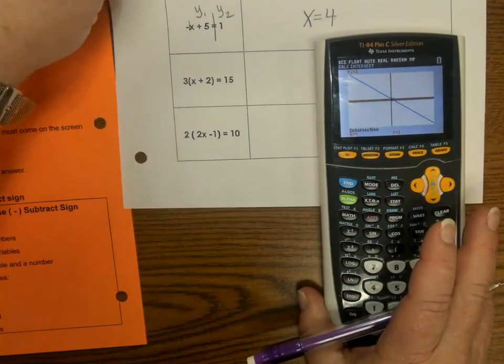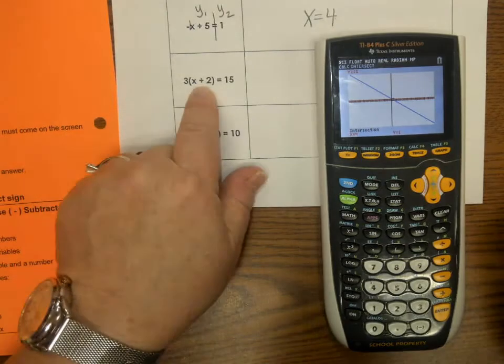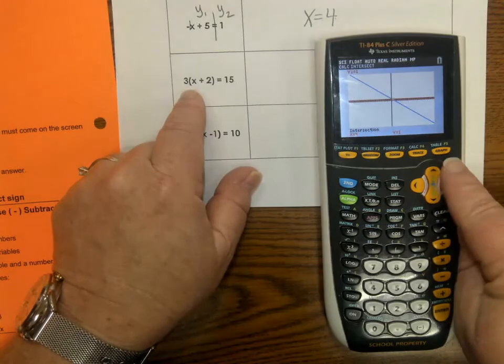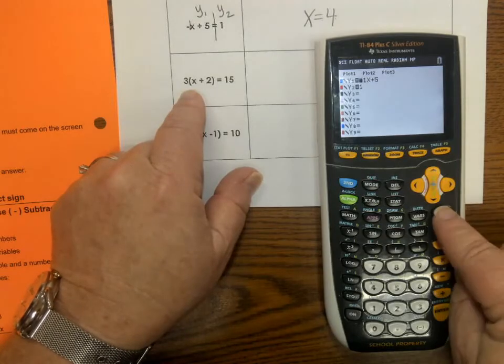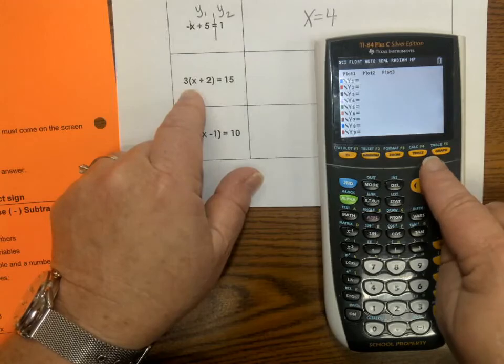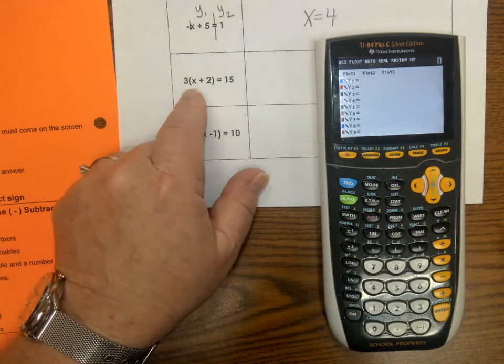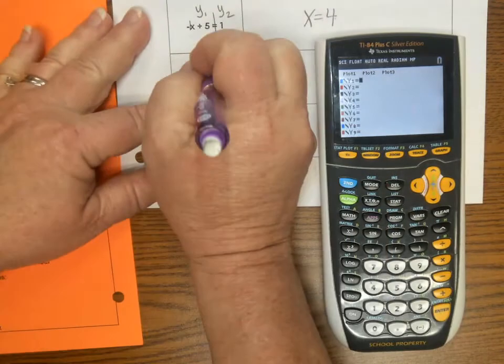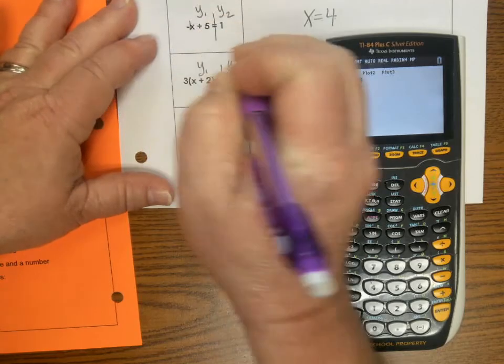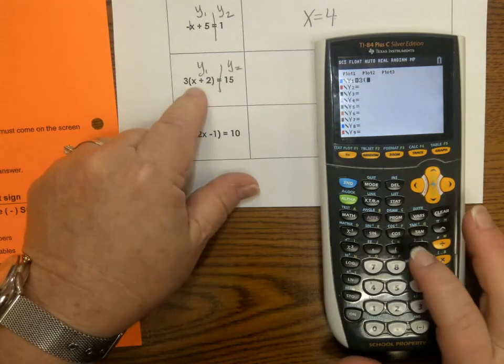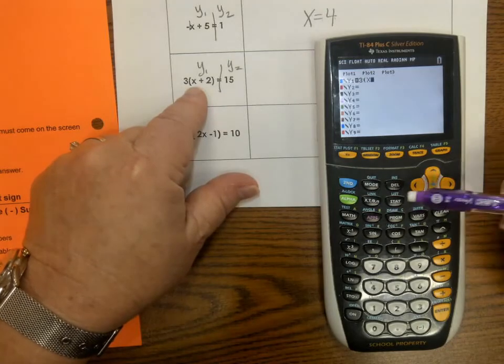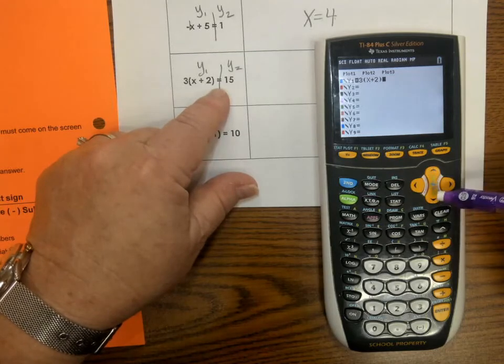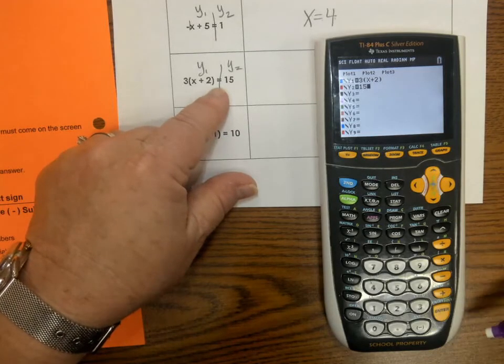A couple more problems we're going to do. I know it kind of looks like a divide, but it's a plus. We have parentheses. So, we are going to use those. Let's first go back to Y equals. Let's clear. And go down. And clear. And go up to Y1. Our parentheses keys are here at 8. Right above 8 and 9. We're just going to put in what we see. We're going to draw our line. This is Y1. Y2. And I'm going to put 3 parentheses. Then I'm going to press X plus 2. Close your parentheses. Then I'm going to go down to Y2. And I'm going to put in 15.